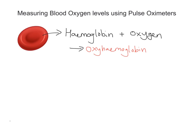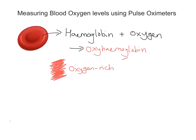Oxyhemoglobin has a particular distinctive colour — it looks a very rich red. This rich red colour of the blood is when there is a lot of oxygen in it. So an oxygen-rich hemoglobin supply is bright red. But what we find is that the reddish colour actually becomes a sort of darker purple when we give up that oxygen and the blood becomes deoxygenated.